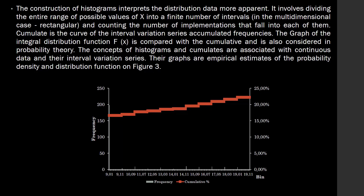The construction of histograms interprets the distribution of data more clearly. It involves dividing the entire range of possible values of x into intervals and counting the number of observations that fall into each of them. The cumulate is the curve of the interval variation series accumulation frequency. The graph of the integral distribution function F(x) is compared with the cumulative and is also considered in probability theory. The concepts of histograms and cumulates are associated with continuous data, and the graphs are empirical estimates of the probability density and distribution function.